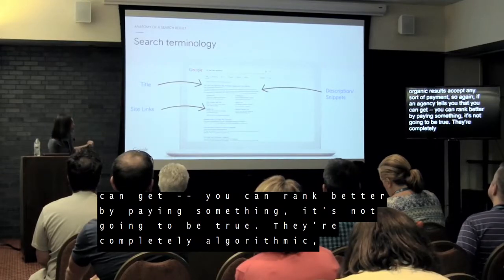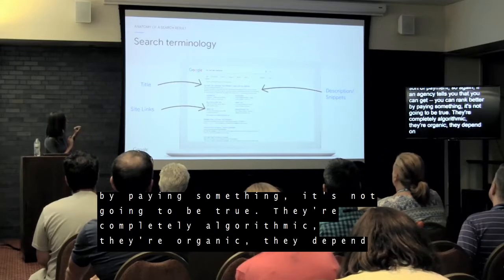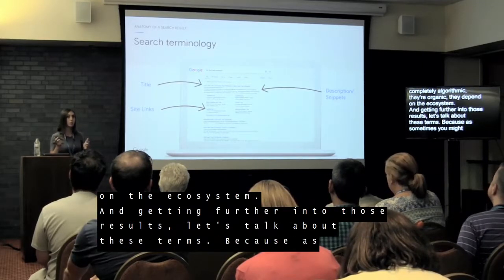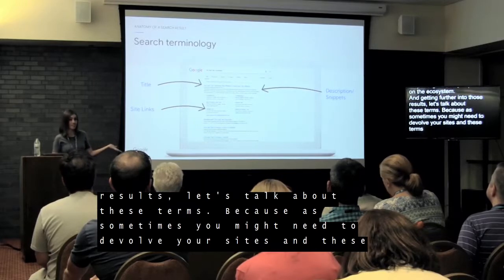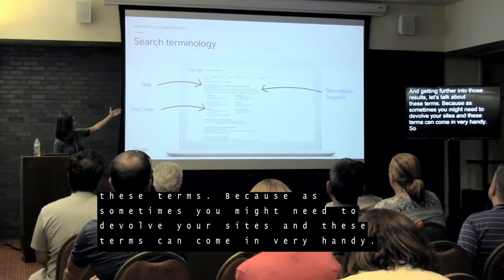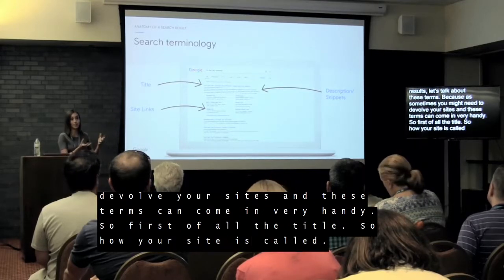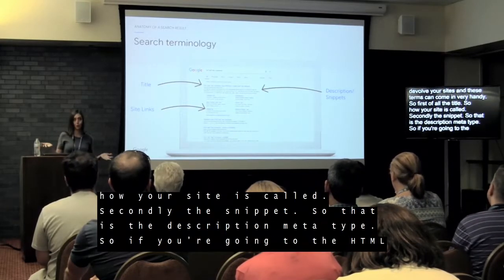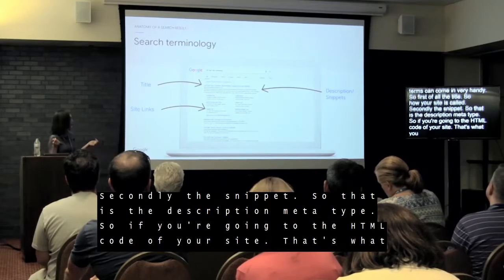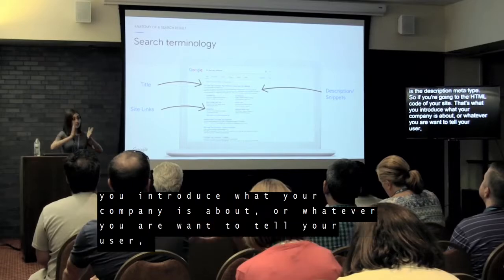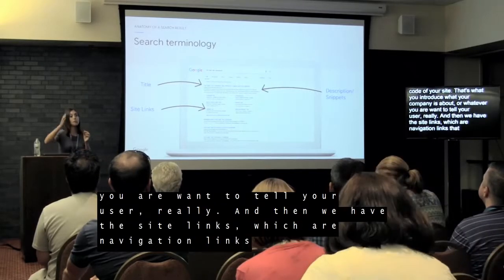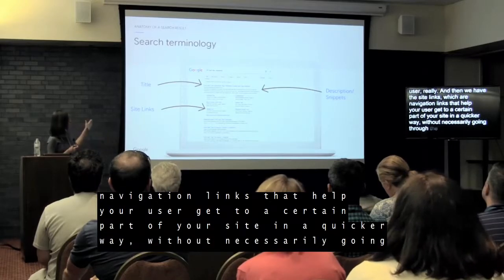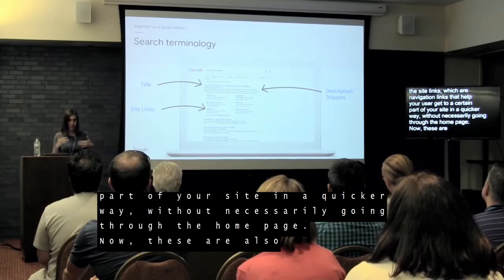Digging into one of those organic results, let's talk about key terms that come in handy when debugging your site. First, the title — how your site is called. Second, the snippet — the description meta tag, where you describe what your company is about in your HTML code. Then there are sitelinks: navigation links that help your user get to a specific part of your site quickly without going through the homepage. These are also algorithmic and don't always appear, but when they do, they really help users.